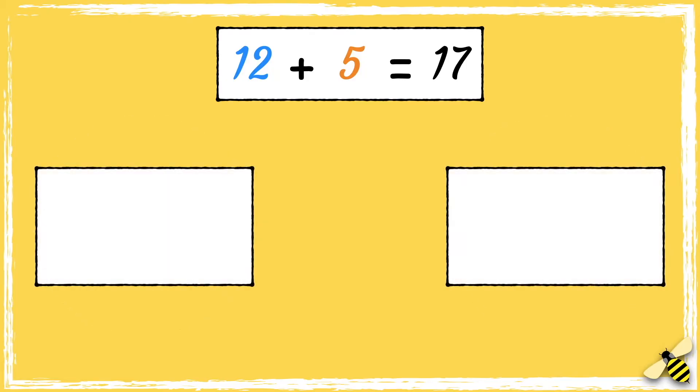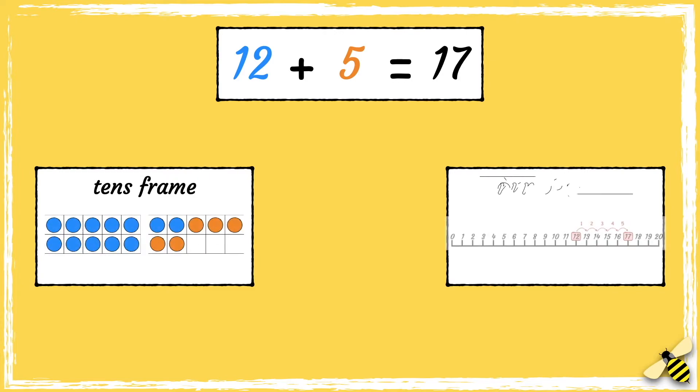Here is a number sentence: 12 add 5 equals 17. Let's look at two different ways where we could check and use the inverse operation: tens frame and a number line.